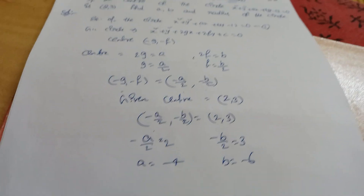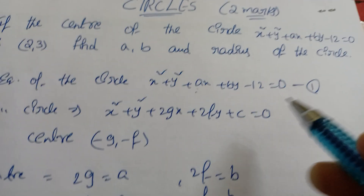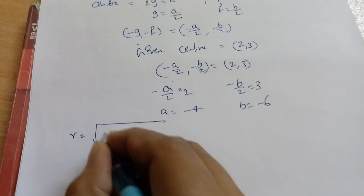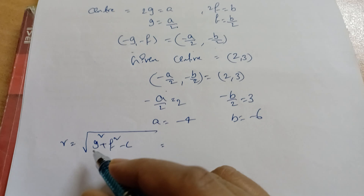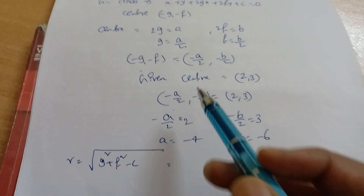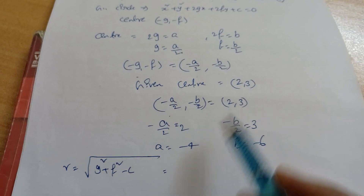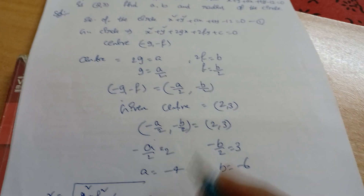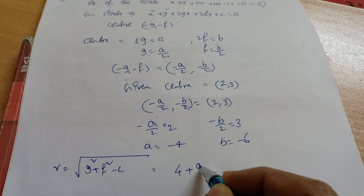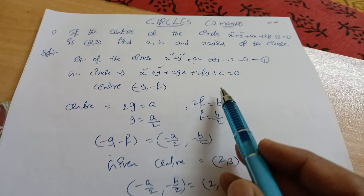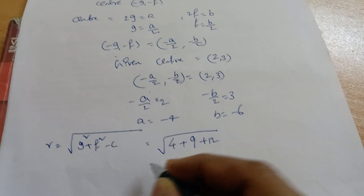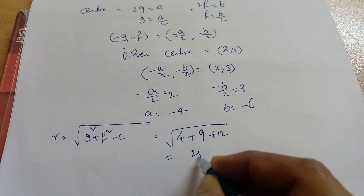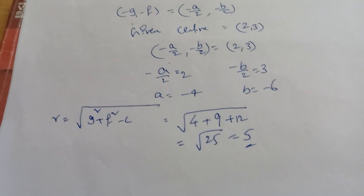Now for the radius. The radius formula is √(g² + f² − c). Here g = −(−4)/2 = 2 wait — using the center values directly: g² = 4, f² = 9, and c = −12, so minus c becomes +12. Therefore radius = √(4 + 9 + 12) = √25 = 5.